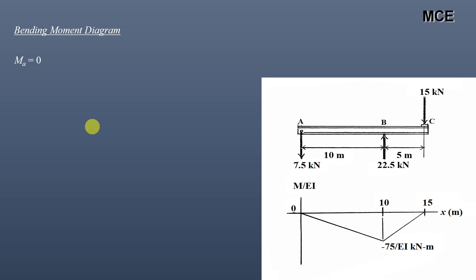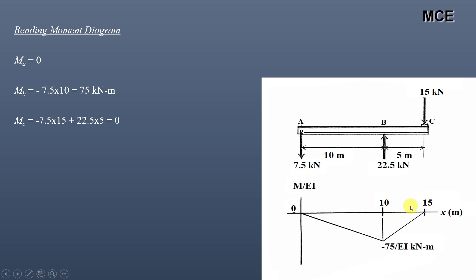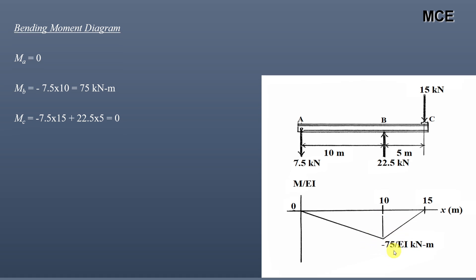After finding the reactions, we draw the bending moment diagram. Moment at A = 0; moment at B = −7.5 × 10 = −75 kN·m; moment at C = −7.5 × 15 + 22.5 × 5 = 0. Dividing the bending moment diagram by EI gives the M/EI diagram. Since EI is constant, the shape is the same — just divide the values by EI.